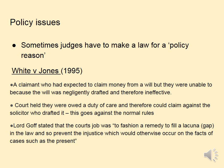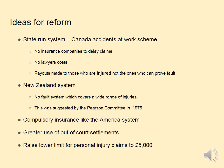Now we need to think about ideas for reform. A variety of different ideas exist, some of which are in action in other countries. For example, a state-run system: in Canada there is an accidents-at-work scheme where there are no insurance companies to delay claims, no lawyers' costs involved, and payouts are made to those who are injured — not just those who can prove fault. If you are injured at work in Canada, you receive compensation quickly because all you have to prove is that you were injured, not that it was anybody's fault.